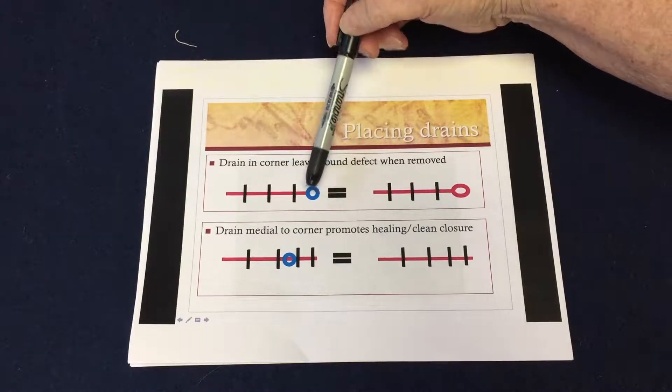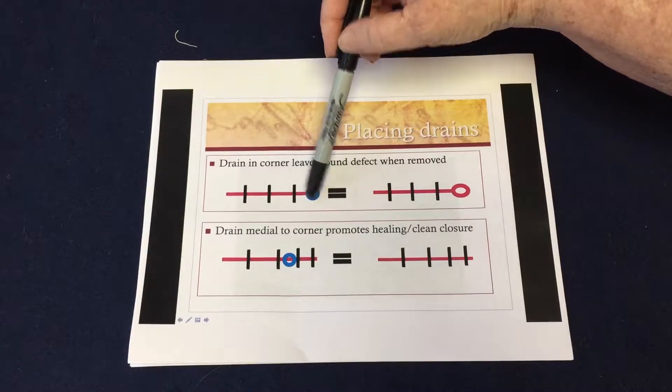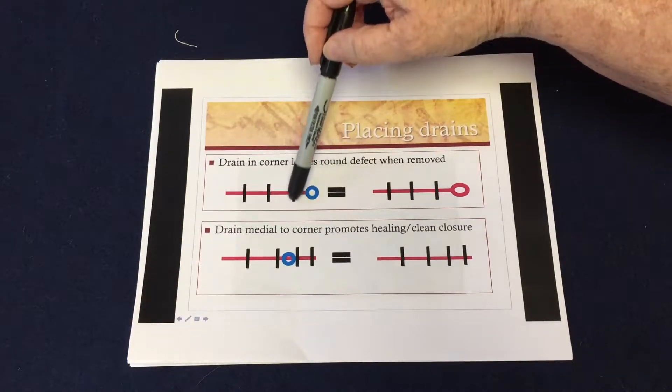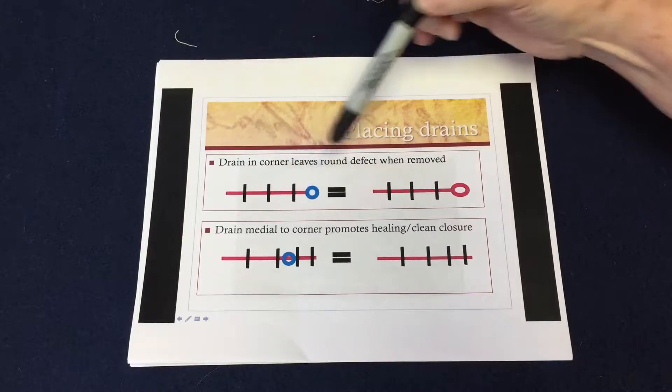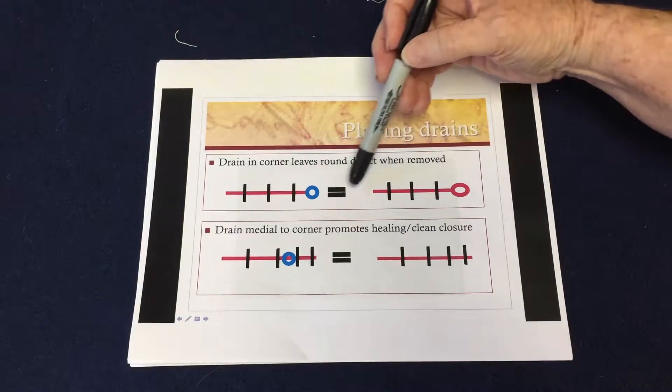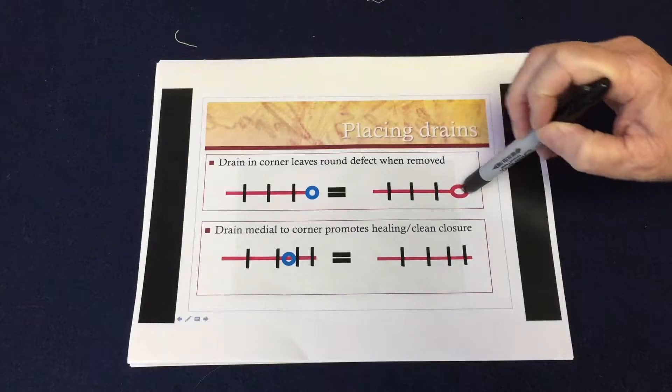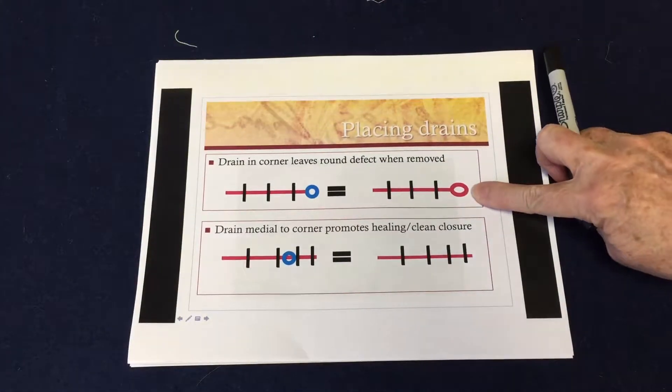All the doctors I had worked with had put the drains when they were coming out in the corner of the incision. The blue is the drain, black is suture, and the red is the skin edge. So when you put it in the corner, when you take it out here's what you end up with.